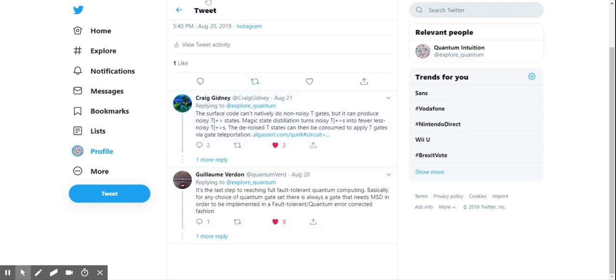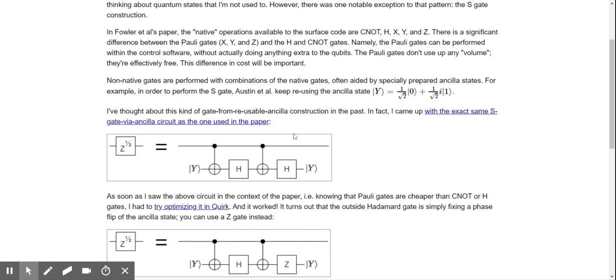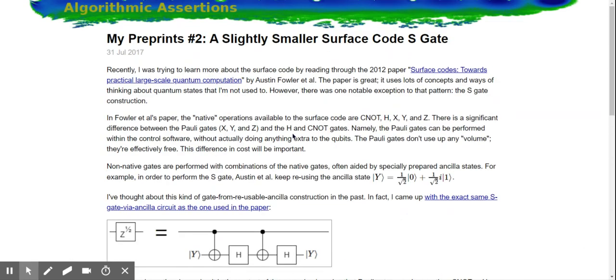I kind of sense where this is going, it might have to do with noise reduction. Then there's this post called 'A Slightly Smaller Surface Code S Gate'. Let's go through this. Recently I was trying to learn more about the surface code by reading through the 2012 paper by Austin Fowler.